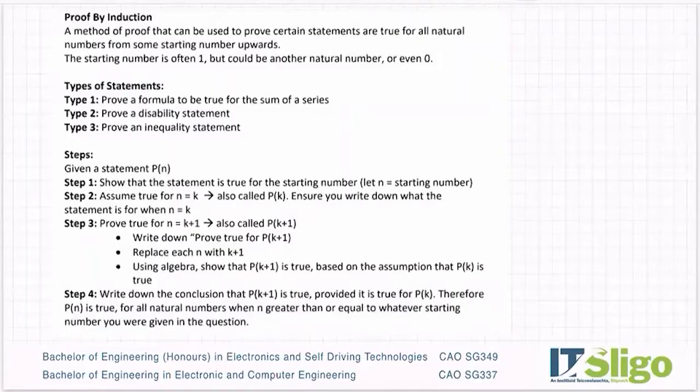So the steps: they're going to give you a statement and I'll refer to it as p of n, it's a function. Step one, you show that the statement is true for n equals the starting number, and in many cases that's one. So you'll often see show true for n is equal to one.